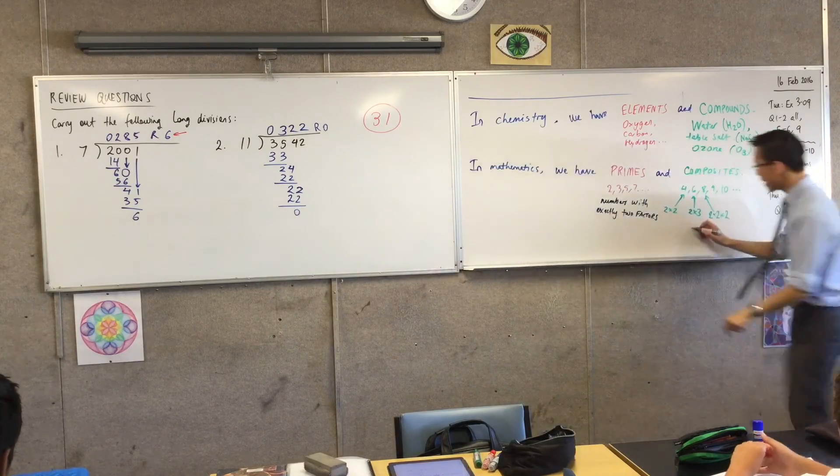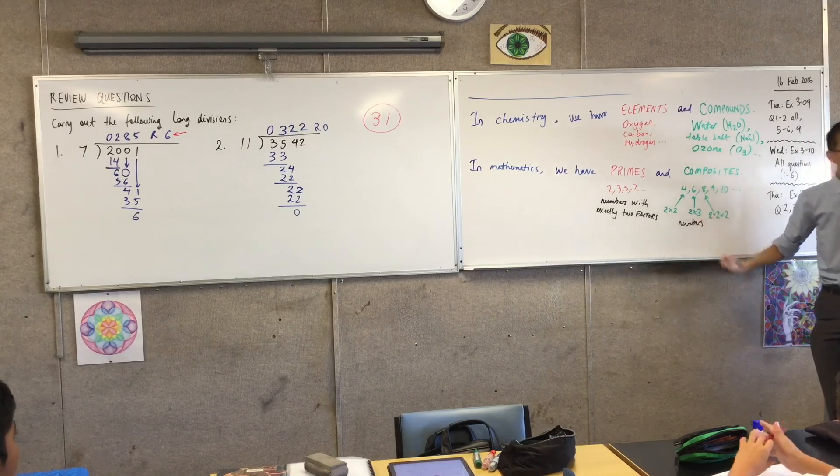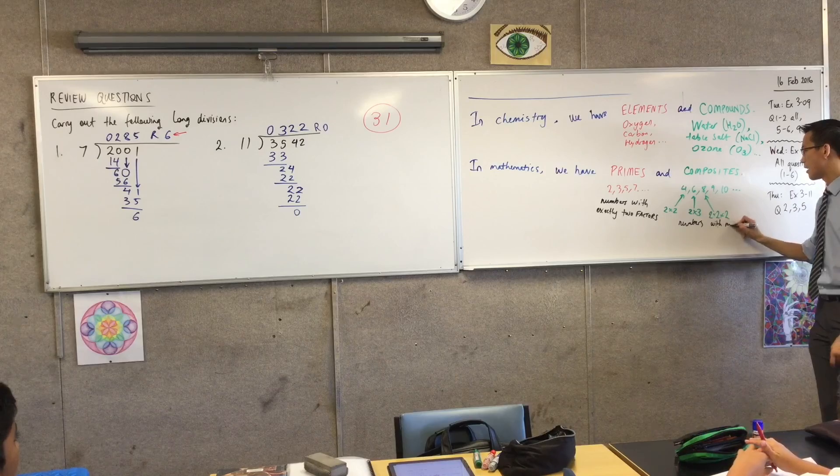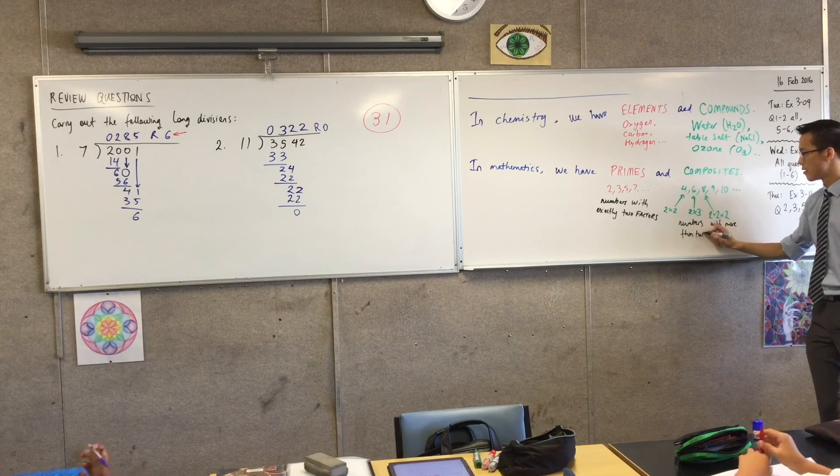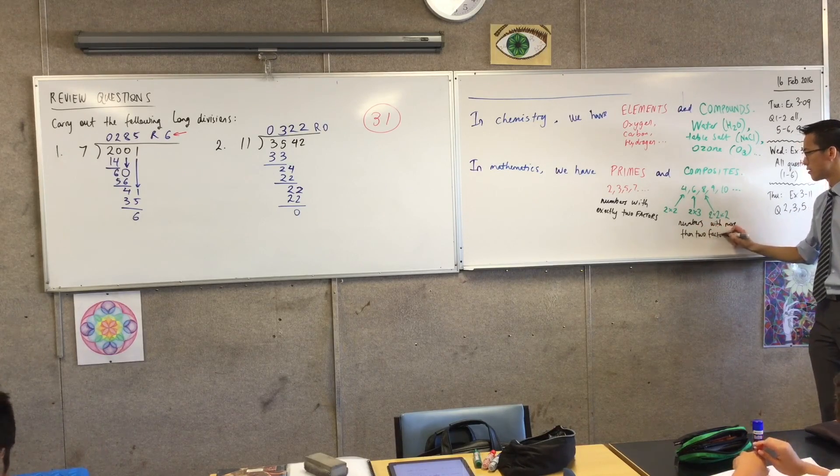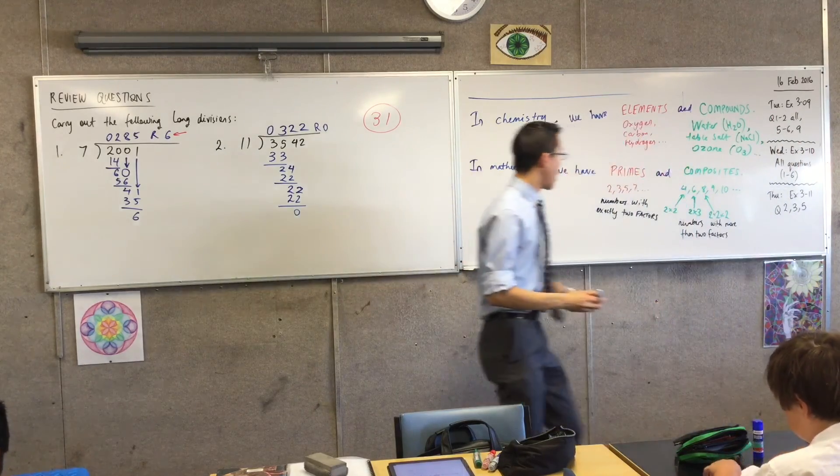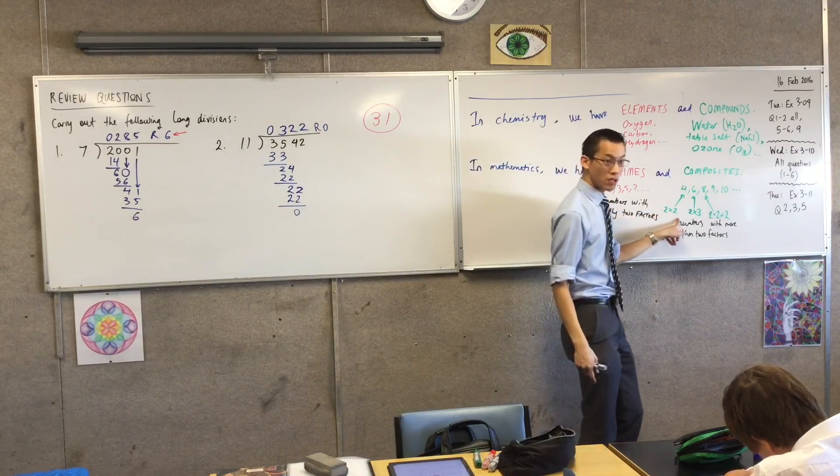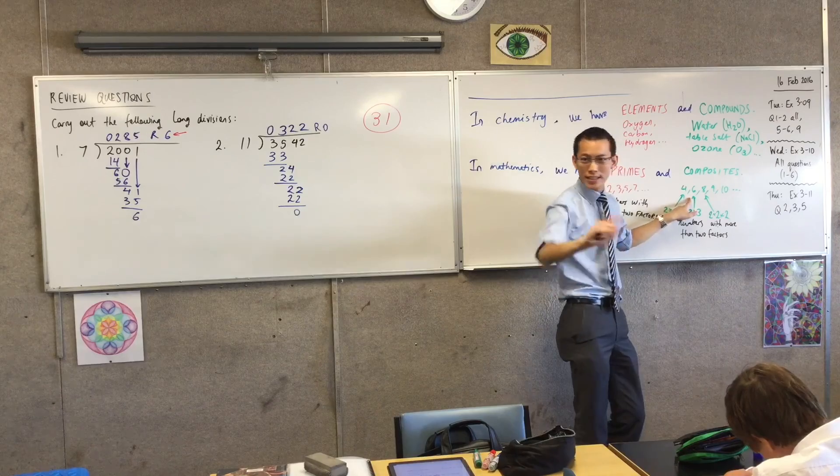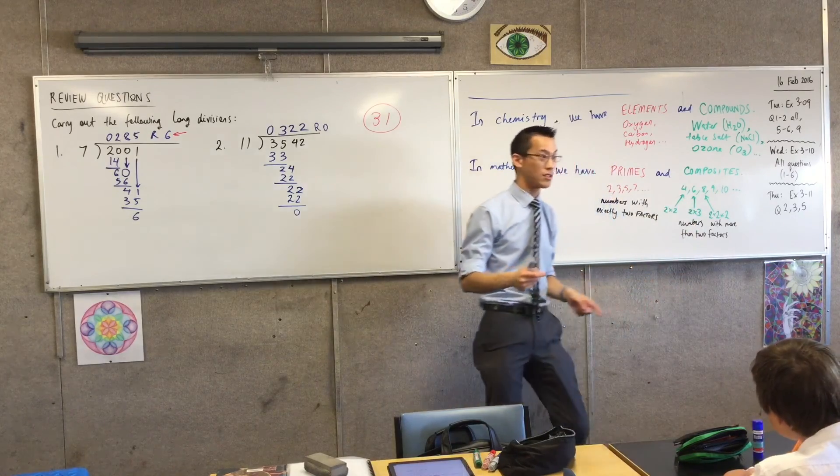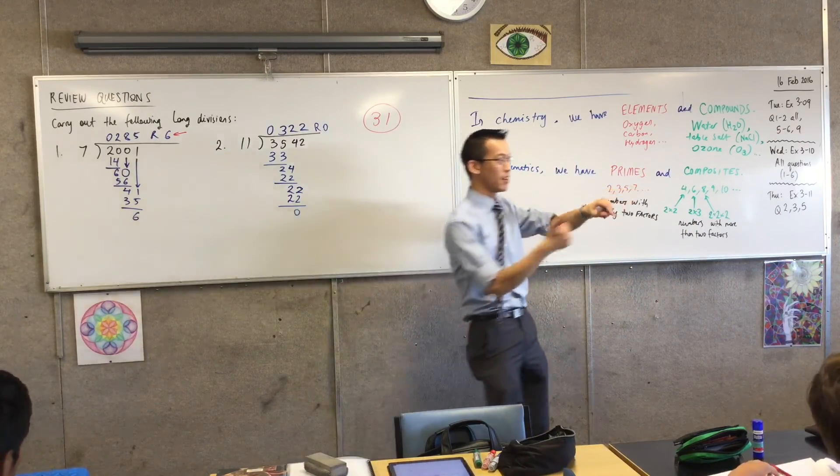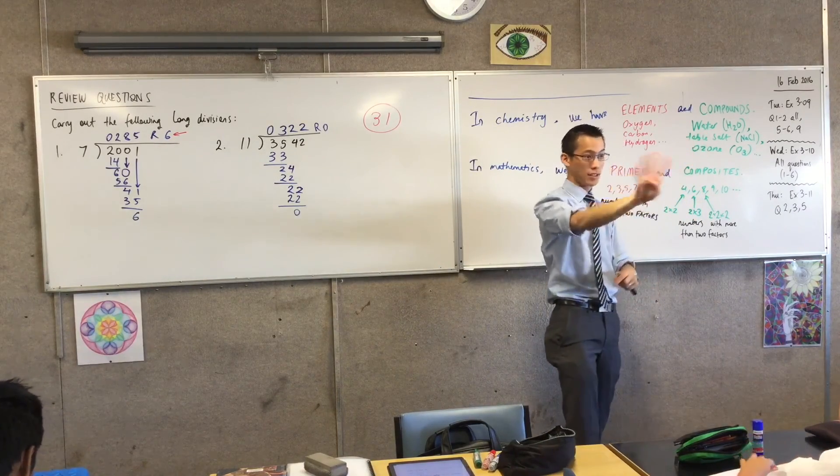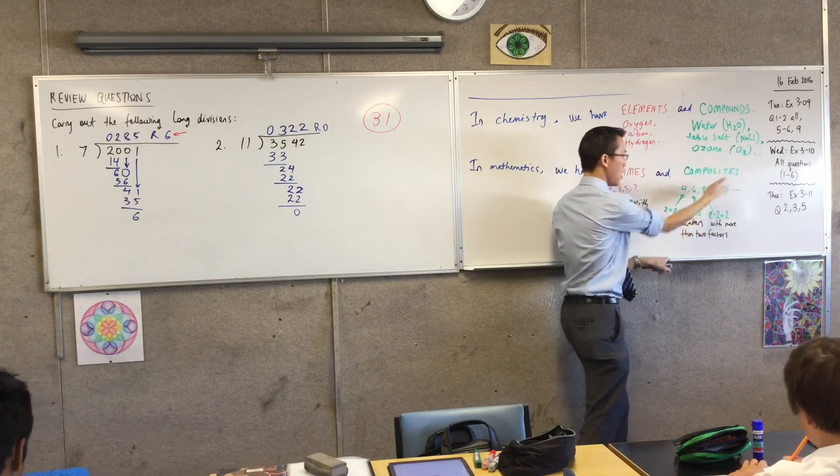For composites, these are numbers, not with 2 factors, but with more factors. Numbers with more than 2 factors. So for example, going back to 4, what numbers can I divide 4 by? It's not just 1 and 4. I can divide by 2. So it's got 3 factors. How about 6? We did this in the diagnostic. What are the factors of 6? You can divide by 3 and 2, and then of course 1 and 6. I've got 4 factors. Do you see that? So if I can divide by more than 2, I'll get a composite.